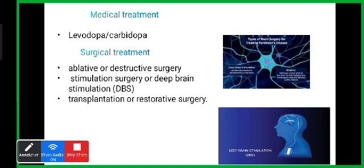When the stimulator is turned on, it sends electrical pulses to regulate faulty nerve signals causing tremors, rigidity, and other symptoms. Transplant or restorative surgery involves stem cell therapy, using undifferentiated stem cells that can develop into various specialized cells to replace or repair damaged or lost brain cells associated with Parkinson's disease.